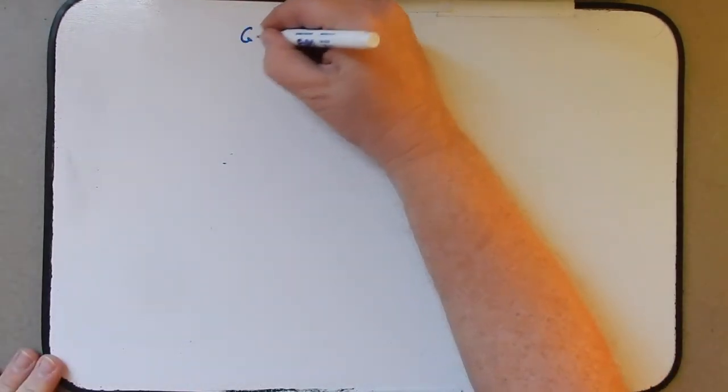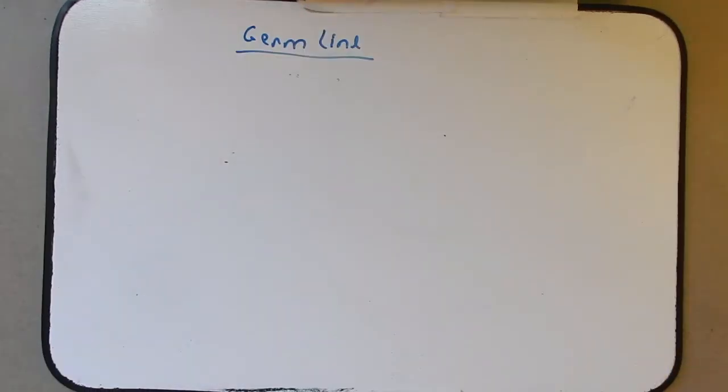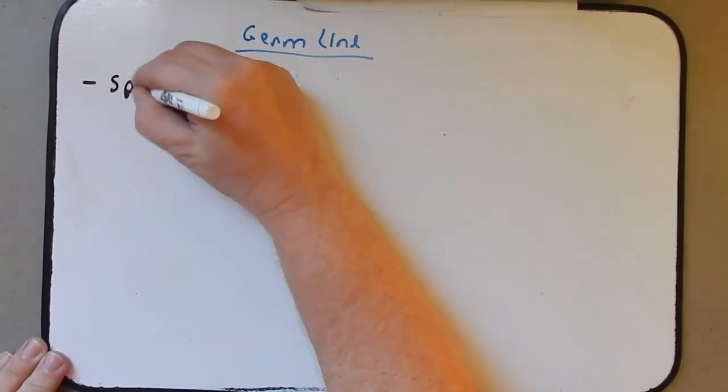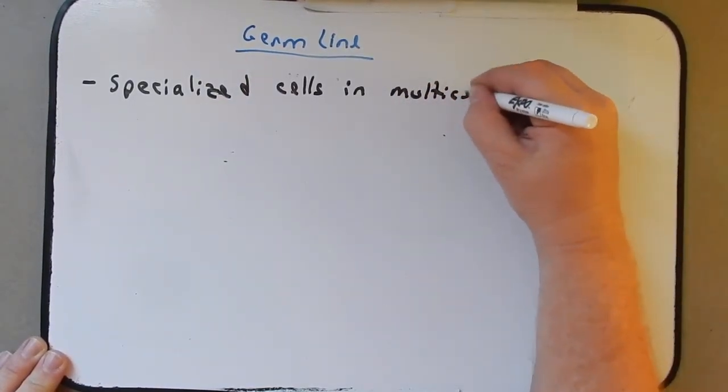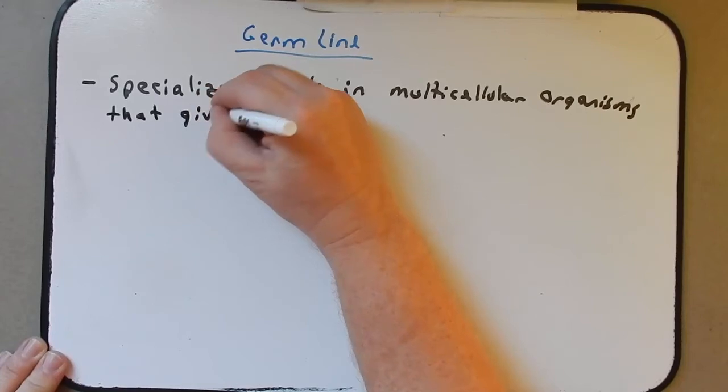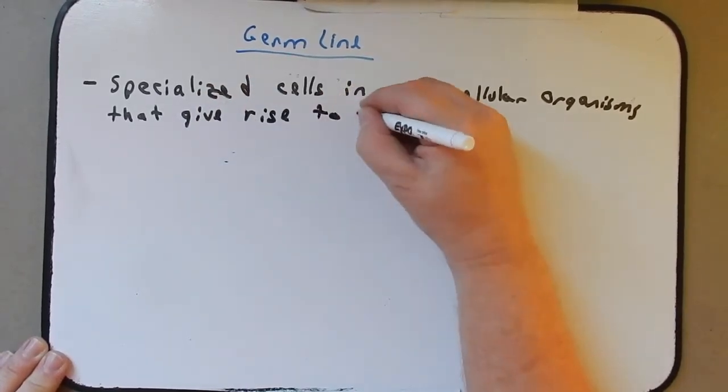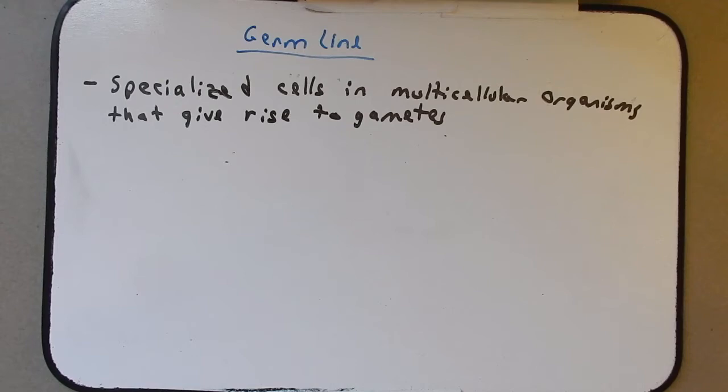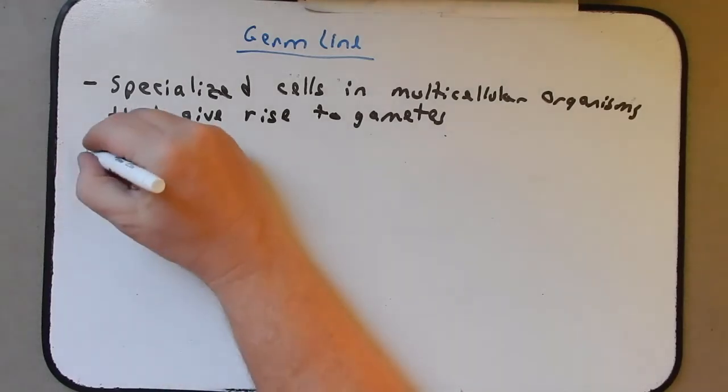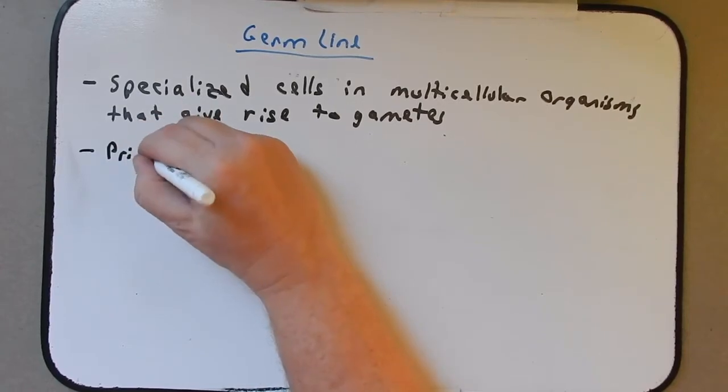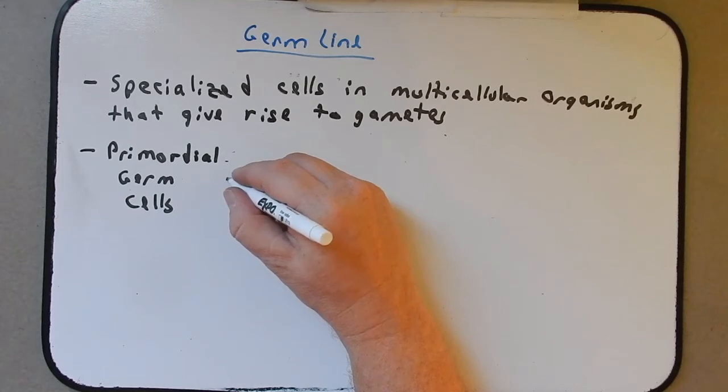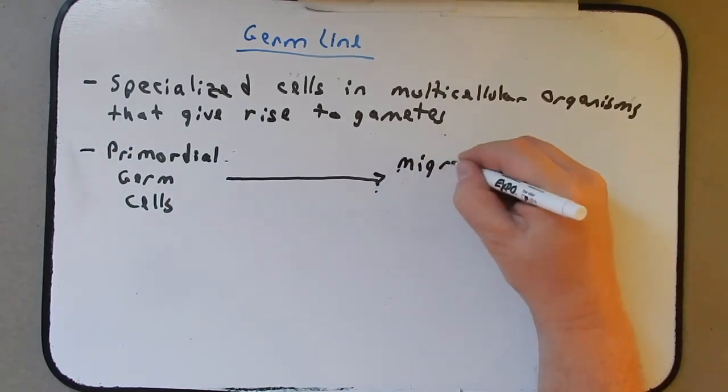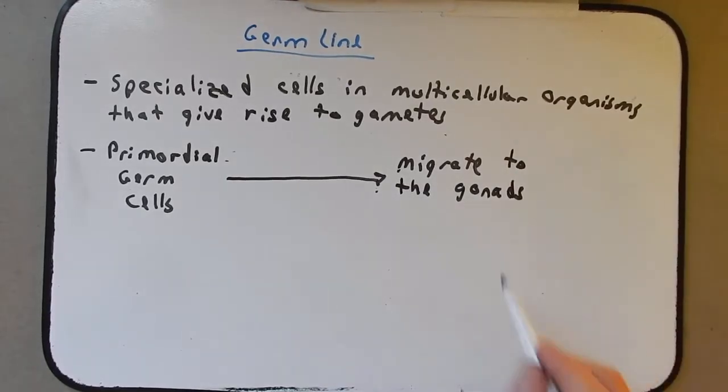Okay, so let's talk about the germline. So, in discussing the germline, let's first give it a simple definition. These are specialized cells in multicellular organisms that give rise to gametes. So, where do they come from? Well, during embryonic development, there is a small pocket of cells called the primordial germ cells.